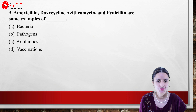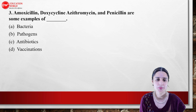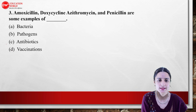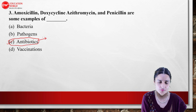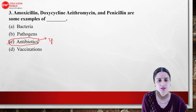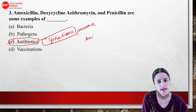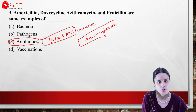Our third question: Amoxicillin, Doxycycline, Azithromycin, and Penicillin are some examples of what? Everyone knows these are antibiotics. What does antibiotics mean? It means to protect against infection — anti-infection. The answer is antibiotics.